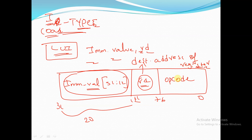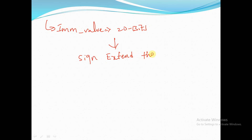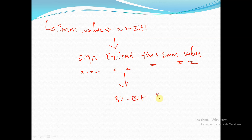Based on the opcode it is determined whether it is a load-type instruction. This immediate value is of 20 bits only. Now what we should do is we have to sign extend this immediate value — we have to convert this 20-bit immediate value to a 32-bit value.